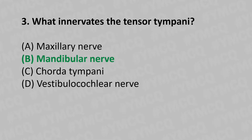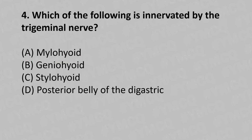Moving to our fourth question: which of the following is innervated by the trigeminal nerve? Option A: mylohyoid. Option B: geniohyoid. Option C: stylohyoid. Option D: posterior belly of the digastric muscle. The answer is Option A: mylohyoid.